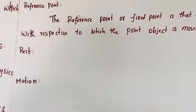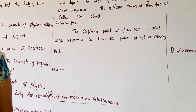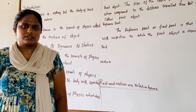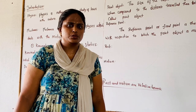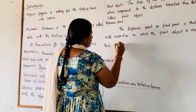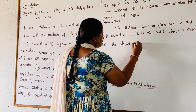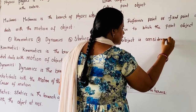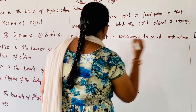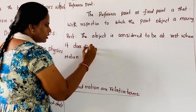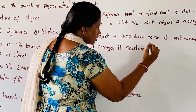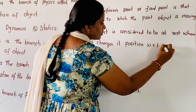And the next is rest. We can say that the object is at rest when, considering a point object with respect to the reference point, it is not changing its position. The object is considered to be at rest when it does not change its position with respect to the reference point.